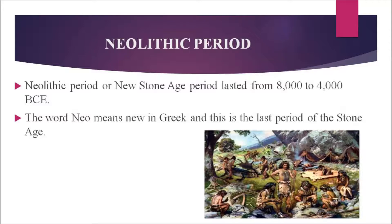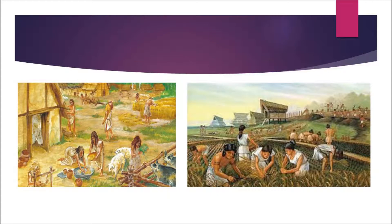The Neolithic period represents a cultural and technological revolution among prehistoric humans. It was characterized by stone tools shaped by polishing or grinding, dependence on domesticated plants and animals, settlement in permanent villages, and the appearance of crafts such as pottery and weaving. The Neolithic revolution, also called the agricultural revolution, marked the transition from small nomadic bands of hunter-gatherers to larger agricultural settlements and early civilization.